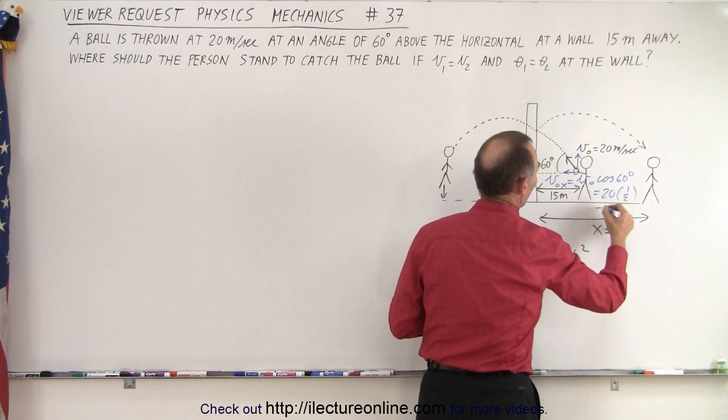V initial in the x direction is v initial times the cosine of 60 degrees, which is one half. So this is equal to 20 times one half or 10 meters per second.